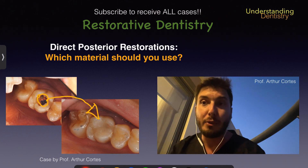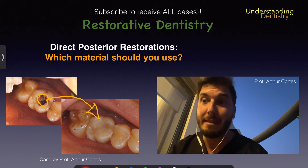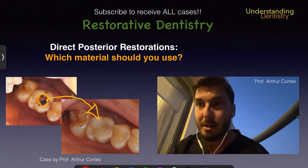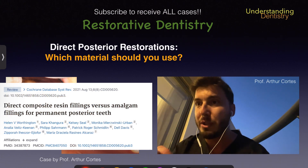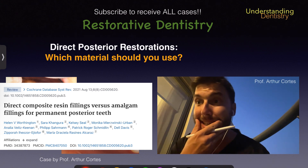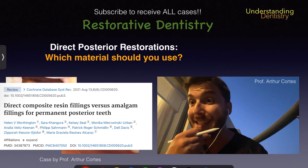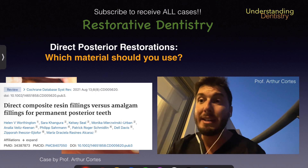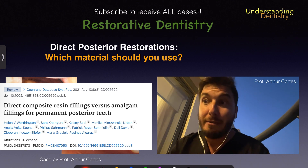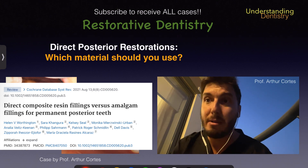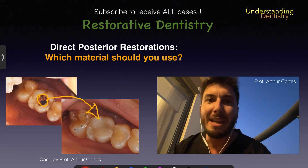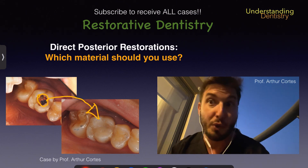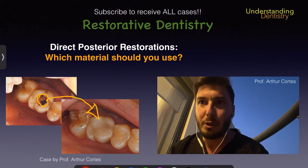I'm not going to cover all the details of comparisons between resin and amalgam. I'm just going to recommend this systematic review for you guys to know the differences. Resins have improved a lot in regard to mechanical resistance and now have even comparable results to amalgam, as shown by some articles. Those would be basically the updated aspects to consider between resin and amalgam.